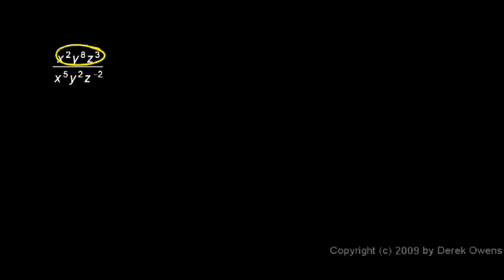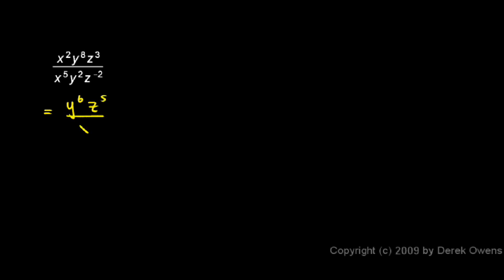Here's an example where we have some variables with exponents divided by some other variables with exponents. The answer in this particular case is y to the sixth times z to the fifth all divided by x cubed. And I'll explain how I got that.